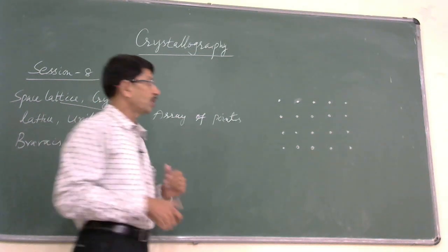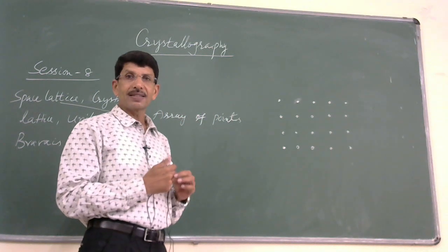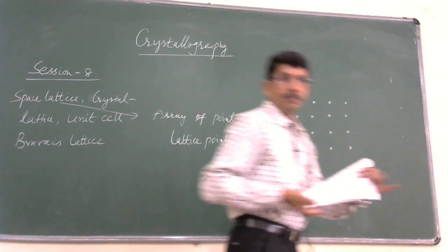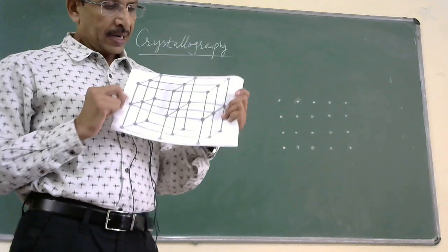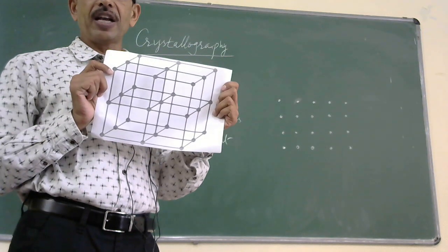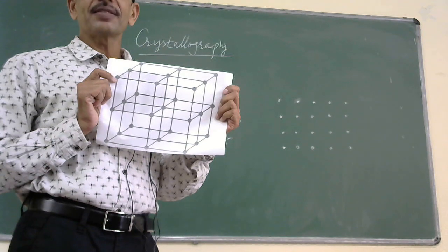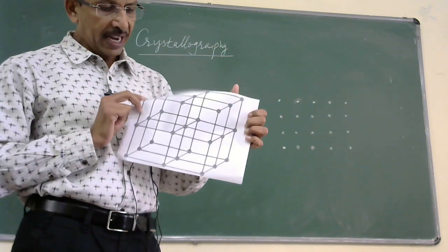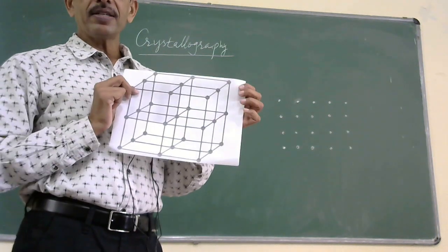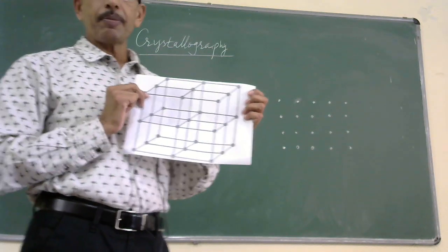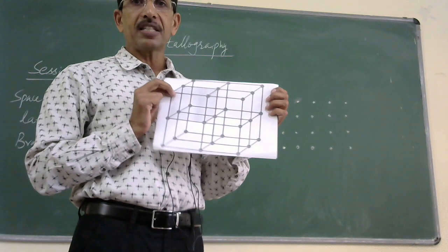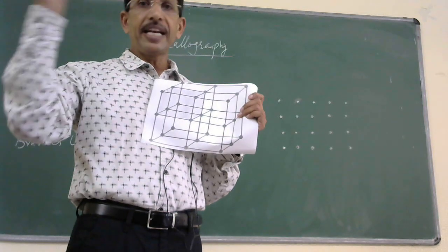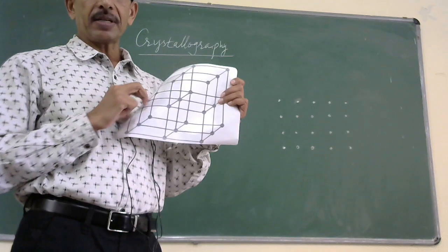The position occupied by a particle in the crystal is called a lattice point. The three-dimensional arrangement of particles in the actual crystal are shown with the help of points on a two-dimensional system. This array of points describing the arrangement of particles in three-dimensional space is called the space lattice, and the points are called lattice points.